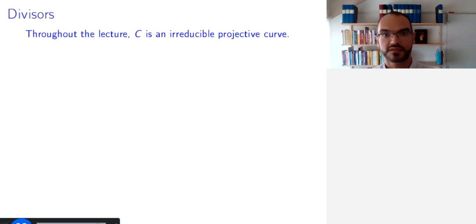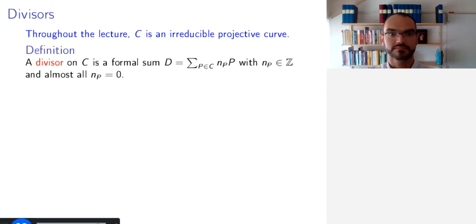So let's start with divisors. And throughout this lecture, we will work with an irreducible projective curve C. So what is a divisor on C? A divisor on C is a formal sum of points on the curve with integer coefficients. So for example, we can have some curve with two points P1 and P2 and we take D equals 3P1 minus 6P2. That is a divisor.